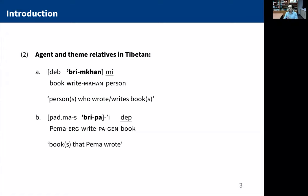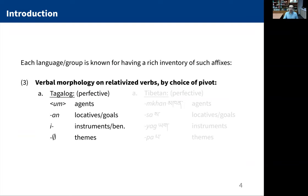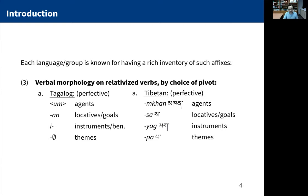If we look at these paradigms generally, each of these languages are independently known in their respective literatures for having a very rich inventory of affixes. Looking at the perfective aspect set in Tagalog, we have different morphology telling us whether we are relativizing an agent, a locative or goal, instrument or beneficiary, or a theme. In Tibetan, looking again at the perfective aspect, we have a particular marker for relativizing over agents, over locative or goals, over instruments, and over themes. So we have this interestingly parallel four-way alternation in both Tagalog and Tibetan.